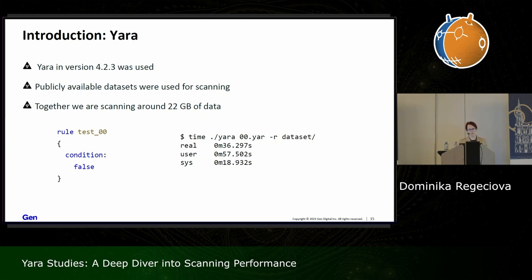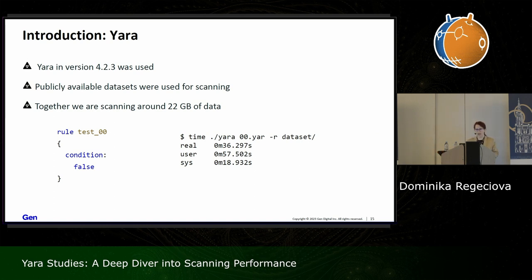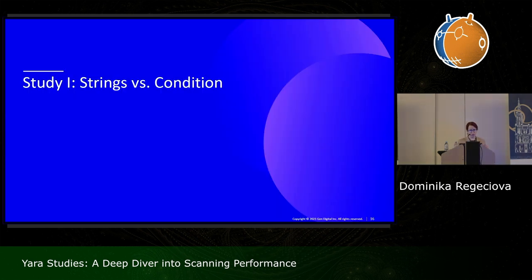For a baseline, I created the simplest rule possible — one that is always evaluated as false, so it doesn't even look into files and should be the fastest rule possible. On my machine — an Ubuntu server — it runs for around 36 seconds. We are trying to get as close to this number as possible.